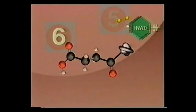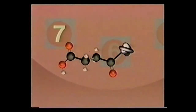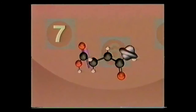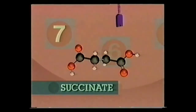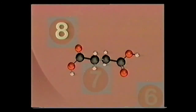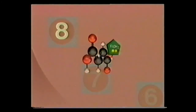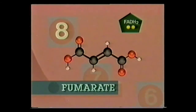Ketoglutarate hooks up with coenzyme A and releases two electrons, a hydrogen, and carbon dioxide to form succinyl-CoA. Once again, two electrons and hydrogen form an NADH energy carrier. Succinyl-CoA reacts with ADP and a phosphate, releasing coenzyme A, producing ATP, and forming succinate. Succinate encounters a molecule of FAD, producing the energy carrier FADH₂ and fumarate.